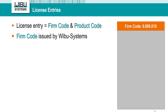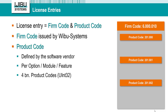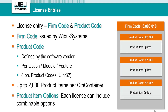Unlike the Firm Code, you choose your Product Codes. Each Product Code is an unsigned integer value, so you'll have 4 billion Product Codes available. Best practices recommend using a different Product Code for every product, module, and feature that you want to sell separately. In our sample, we are using Product Code 201.000 for a basic version of our software, and Product Codes 201.001 and 201.002 for two additional features. A user who purchases the basic version gets only Product Code 201.000. A different user, who purchases our software with two additional modules, gets all three Product Codes.